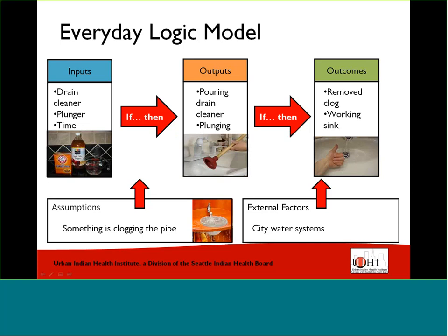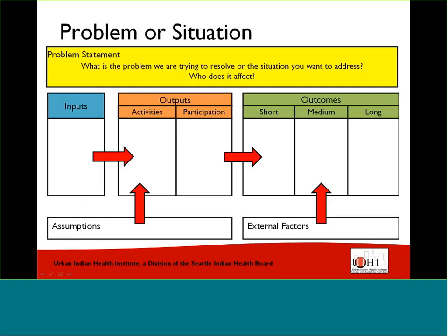Now we'll look at how logic models are applied in a public health setting and get into a little bit more detail about each of these components. When developing a logic model, you can work forward from your current situation and resources to your desired impact, or you can work backward from your desired impact to your resources. For our example, we'll begin by defining our problem or situation and the assumptions we have about that problem, define our end goal, and then work forward through the logic model to reach that goal. We'll be using the example of a cardiovascular disease intervention.